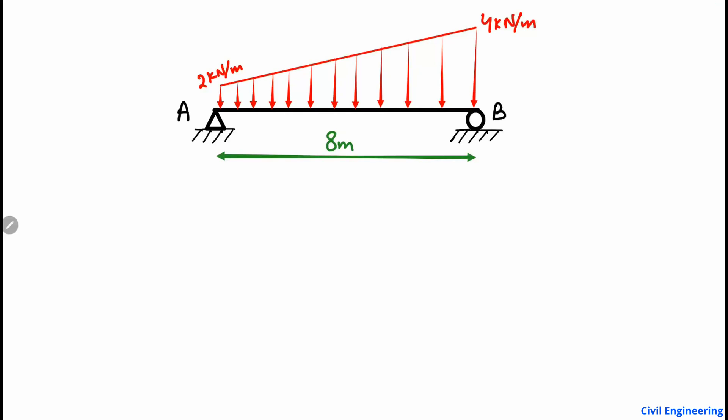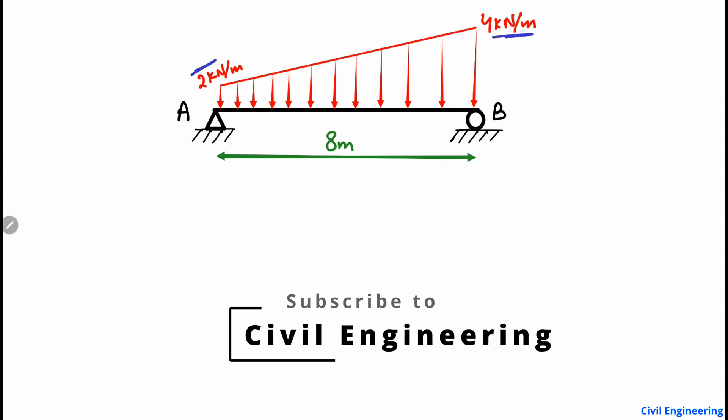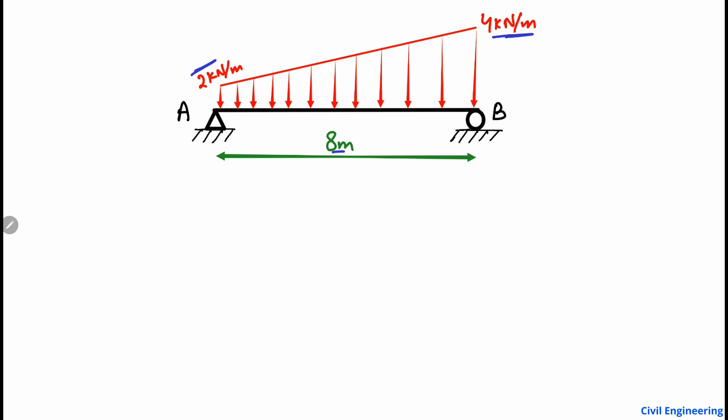Welcome back to your civil engineering YouTube channel. In today's lecture, we are going to analyze a simply supported beam with a varying distributed load. There is a trapezoidal load acting on the beam which increases from 2 kN/m to 4 kN/m, and the total length of the beam is 8 meters. We are going to analyze this beam and find out the support reactions.